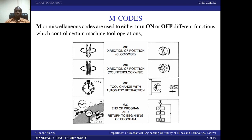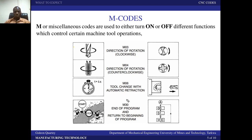For example, when cutting a thread, you go in the clockwise direction to cut, and then to retract the tap you turn it in the anti-clockwise direction. M06 is for tool change with automatic retraction — the machine retracts the tool from the working position before it can be changed. M30 is used to end the program and return to the beginning of the program.